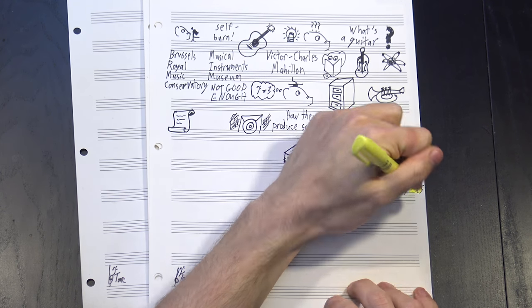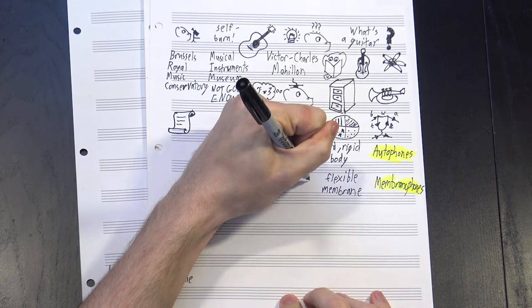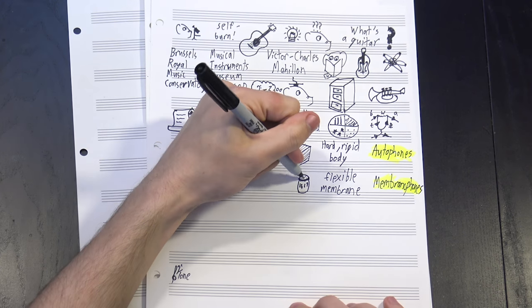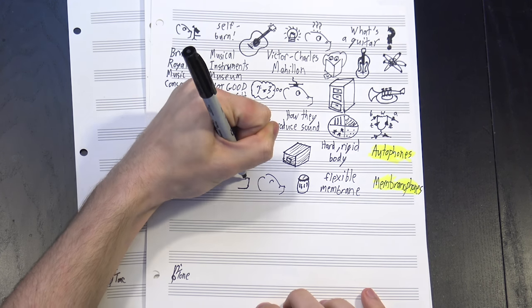The next group are the membranophones, which have a flexible skin or membrane, including most hand drums, as well as everyone's favorite dollar store instrument, the kazoo.